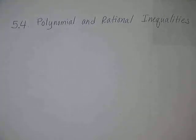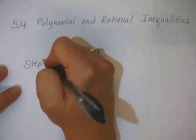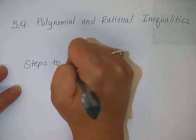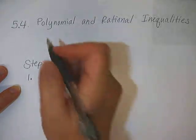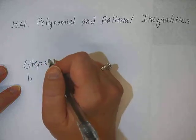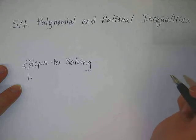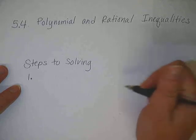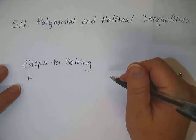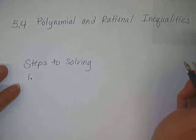The first step to solving these rational and polynomial inequalities is number one: take your function — or actually it's not written as a function, it'll be written as an equation. It will have one variable with an inequality sign, and you want to move everything onto the left side with zero on the right side.